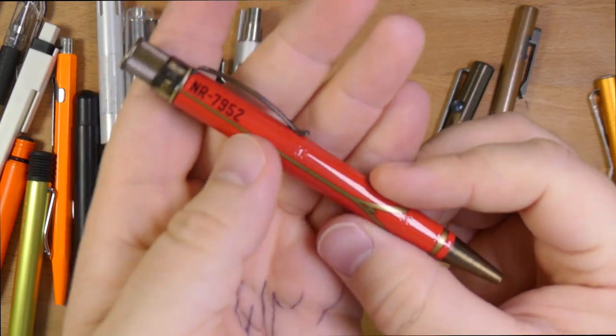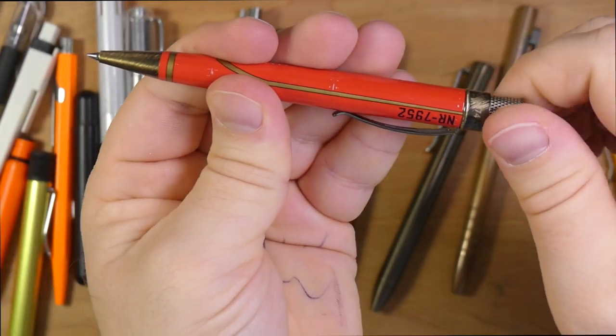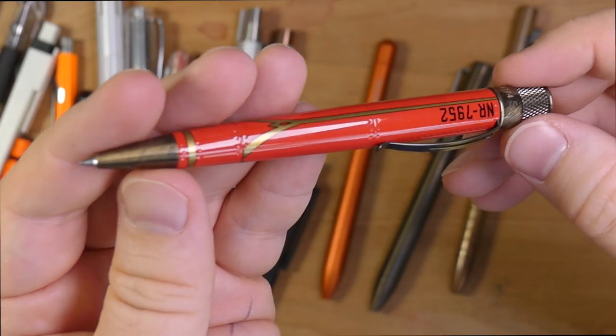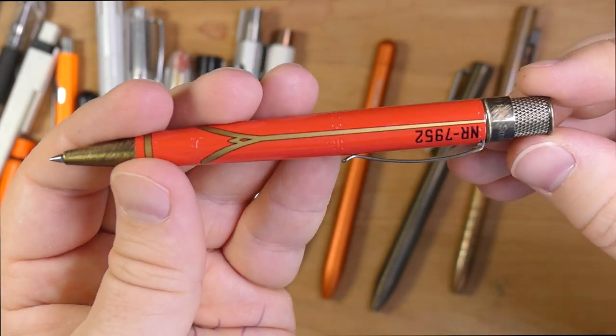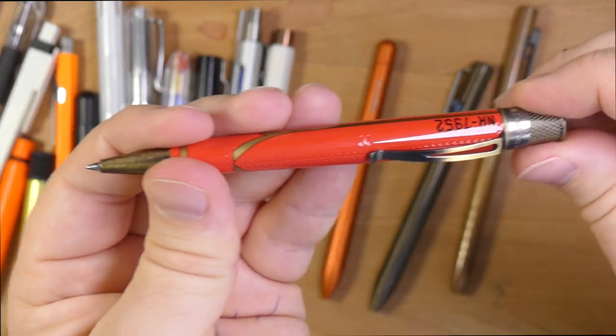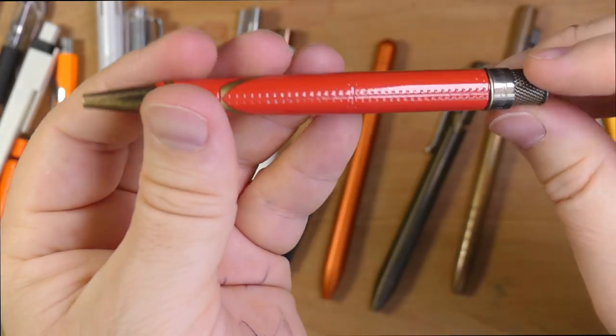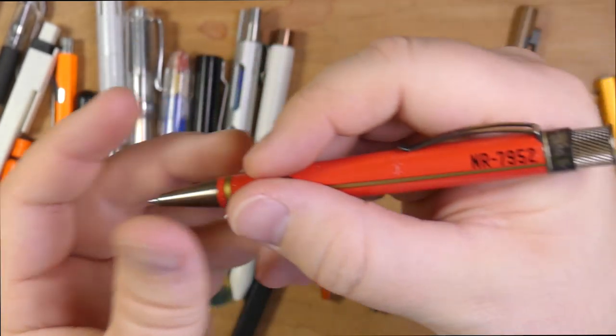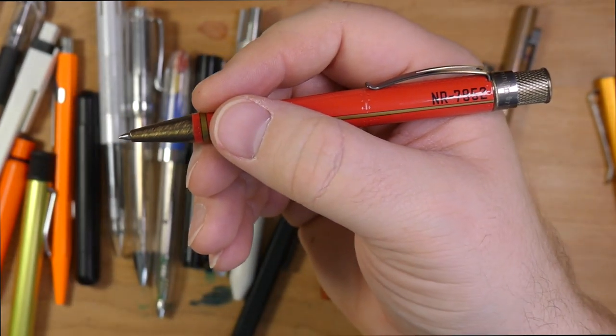Real last pen. This is the retro 51 Tornado. You twist to the top to extend the point. This has, of course, got a ballpoint refill in here. It's got a Jetstream refill because I love those. And I don't like the rollerball it comes with. This shouldn't be a rollerball pen. It should be a ballpoint all the time. This is the Amelia Earhart version. It's got the Smithsonian tag at the top. Check that out.